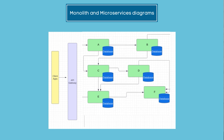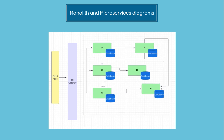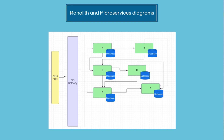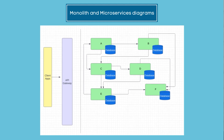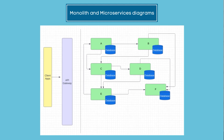Coming to microservices architecture, every single service is a different component with its dedicated database. There is an API gateway to guard the client apps and route them. We can discuss the API gateway in detail in another video, but this is the overall architecture of microservices.